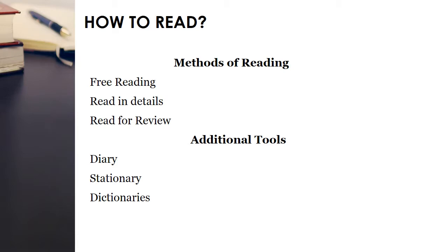Read for review is basically an exercise which saves your time and unlocks all the data which is already stored in your brain. You started free reading, then you went through reading in details. All the information, all the ideas, all the words you learned from the text are saved in your brain. Now by doing a review, you will unlock all the information available in the text. This technique is widely followed all over the world.